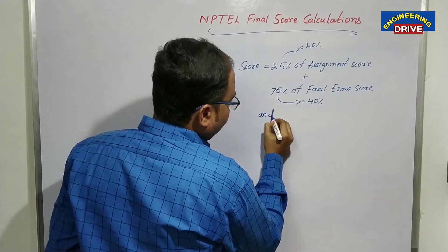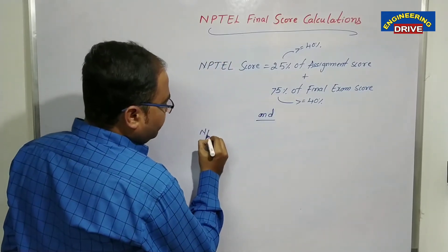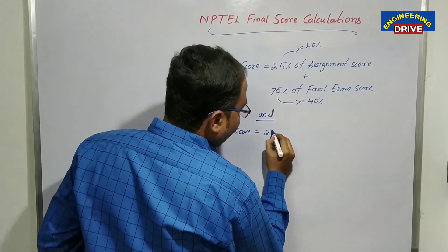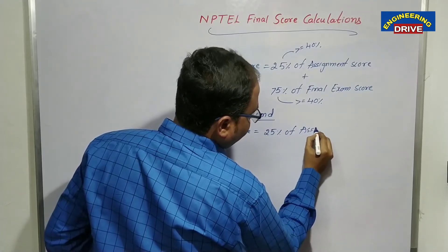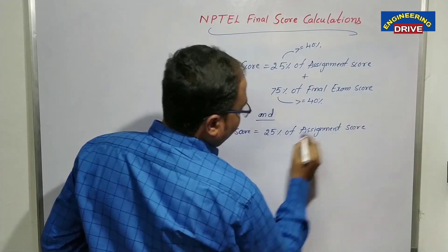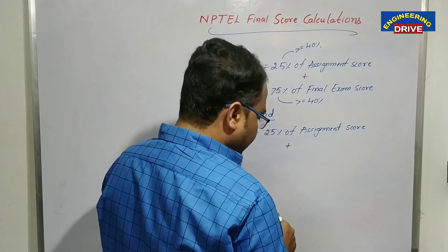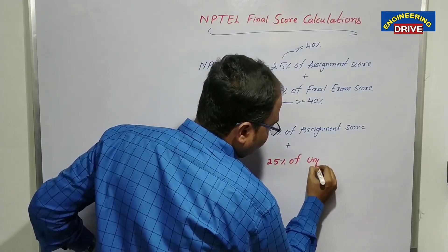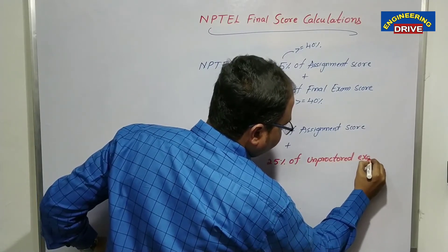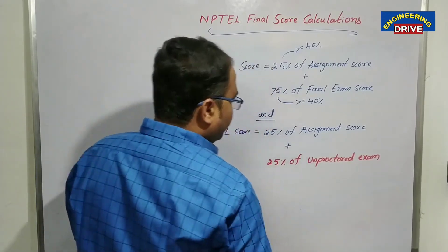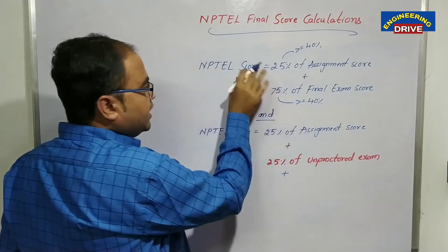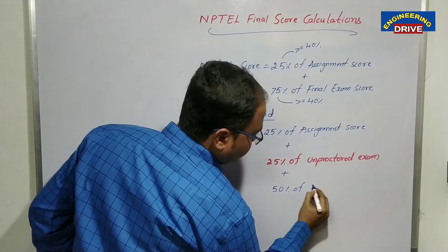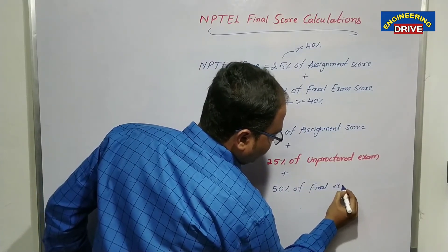There is one more method — Type 2 — for how NPTEL calculates the final exam score. In this method: 25% of assignment score, plus 25% of unproctored exam, plus 50% of final exam score. This is especially for programming courses. Previously in Type 1, the final exam was for 75%. But in Type 2, the final exam is for only 50% marks.